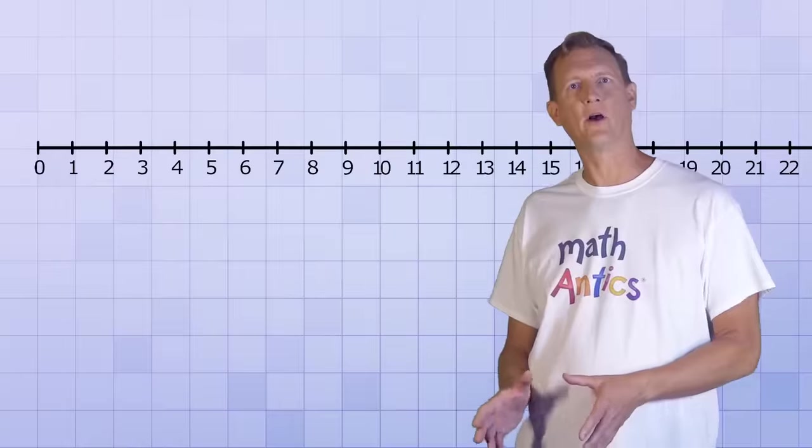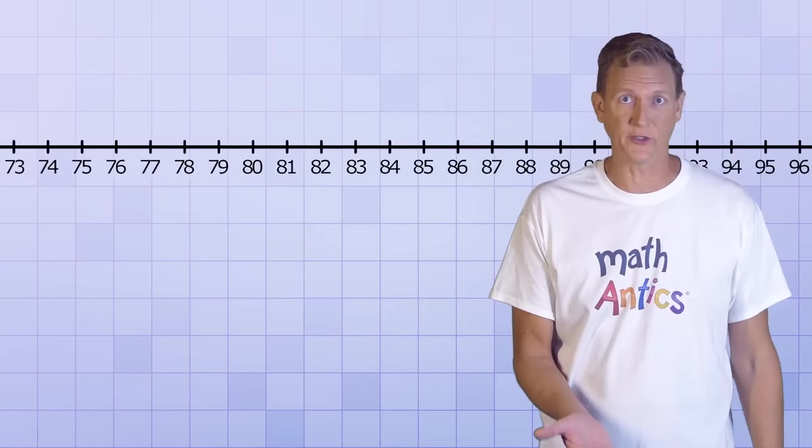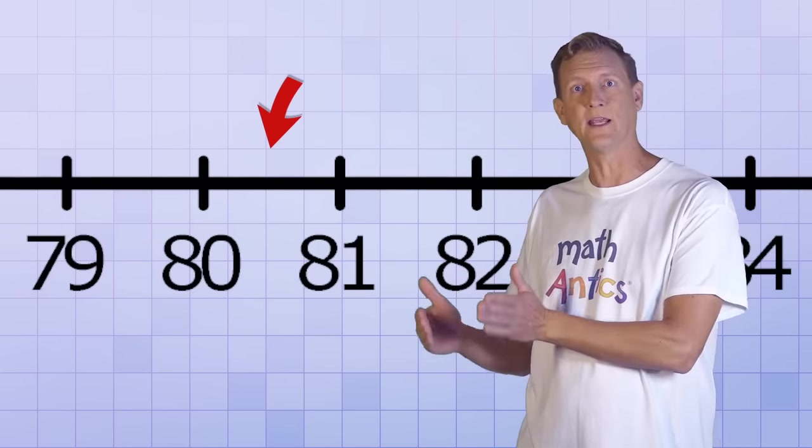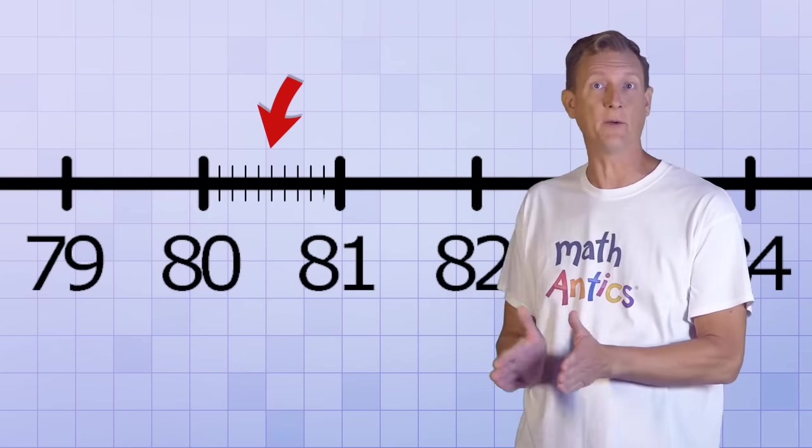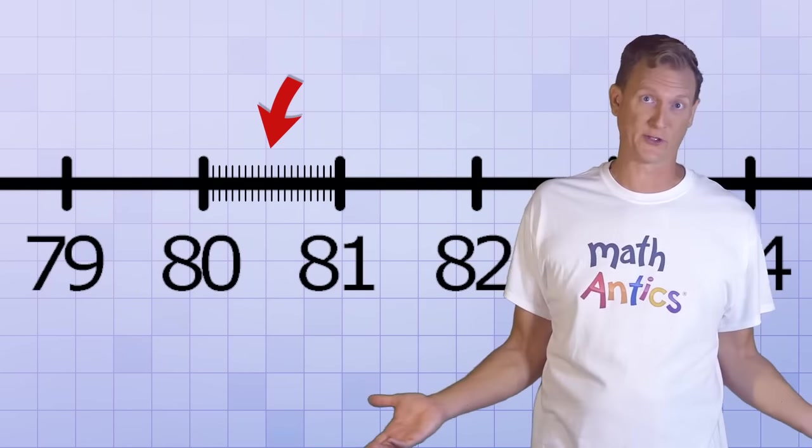It's kind of mind-blowing if you think about it. Not only are there an infinite amount of numbers on the number line even if you just stick with the whole numbers and count them forever, which you can't actually do, but there's also an infinite amount of numbers in between each pair of whole numbers if you keep subdividing forever, which you can't actually do either.